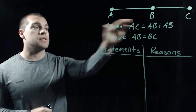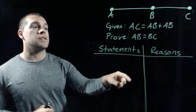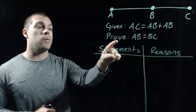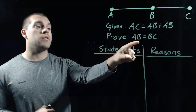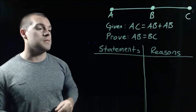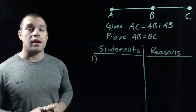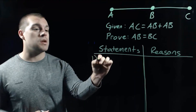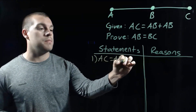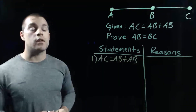In this next example, we've got a line segment to take a look at. We're told that the length of AC is equal to AB plus AB, and what we want to prove is that the length of AB is equal to the length of BC. Just like before, we always want to start off with the given information, so we've got AC is equal to AB plus AB, and our reason there is just "given."